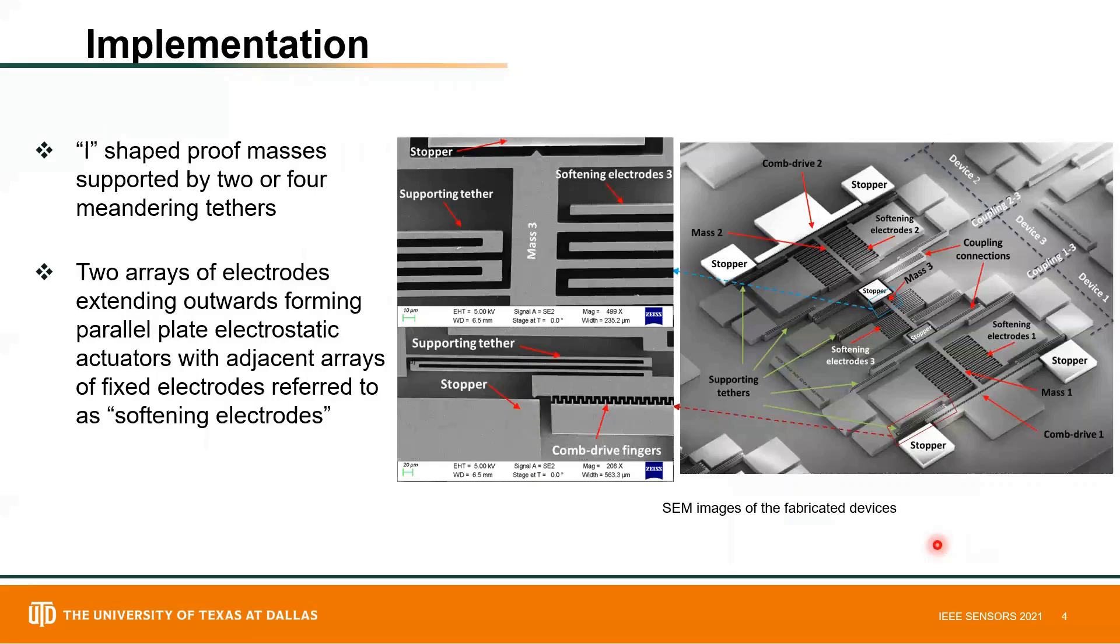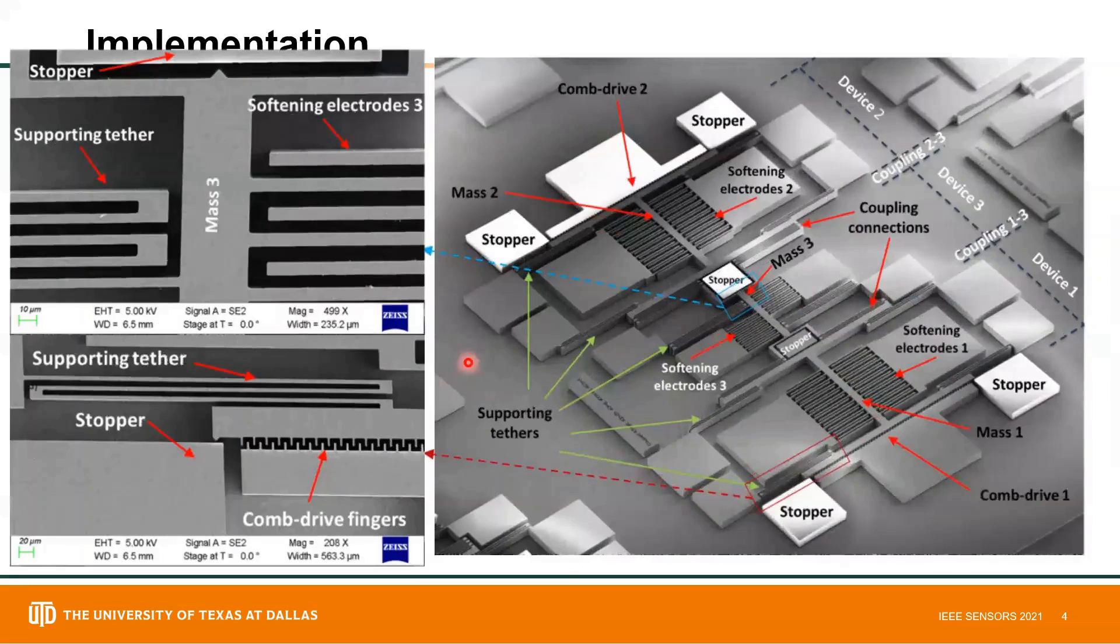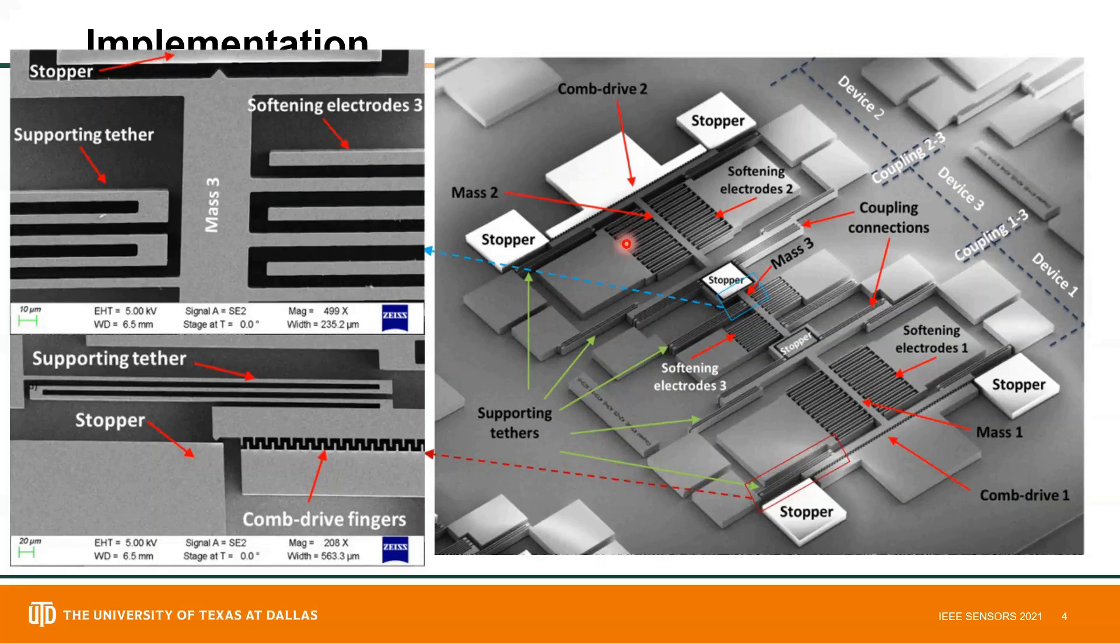Each I-shaped proof mass is supported by two or four supporting tethers. Two arrays of electrodes extend outward from each mass to form parallel plate actuators. These actuators are referred to as softening electrodes.